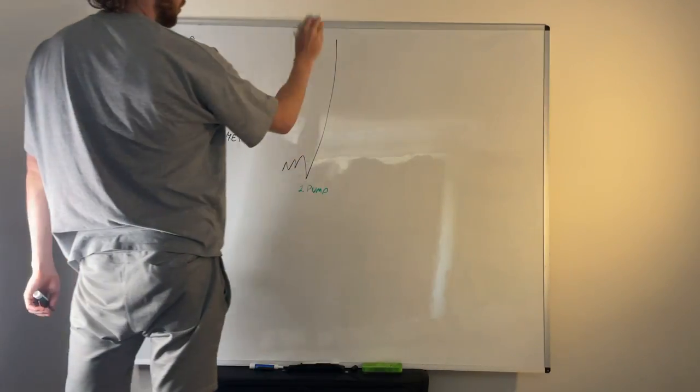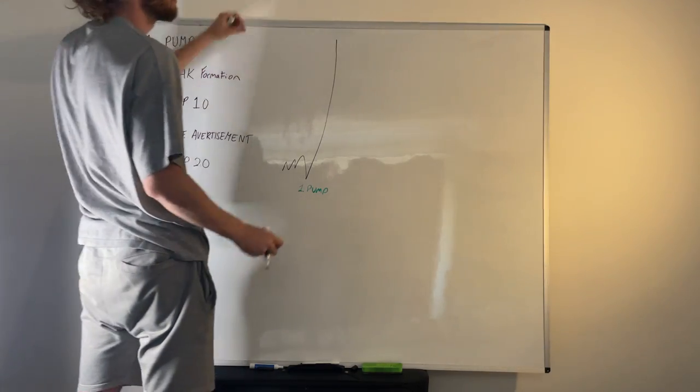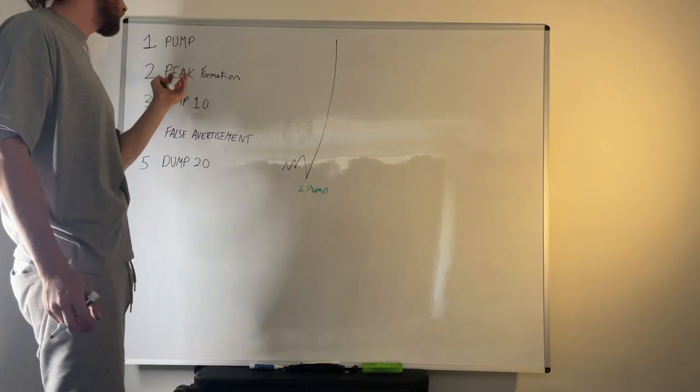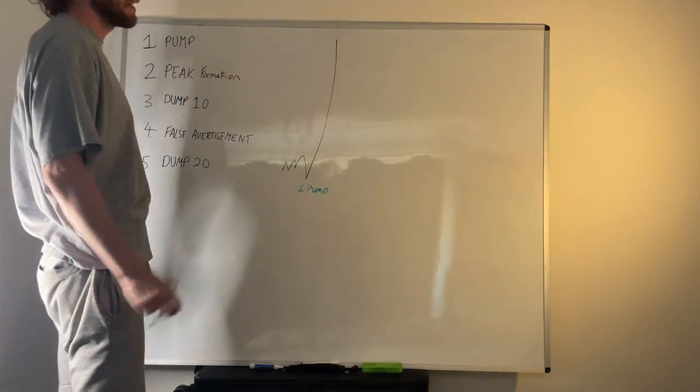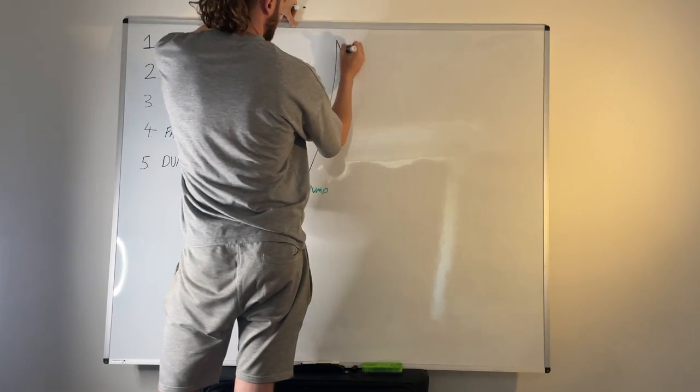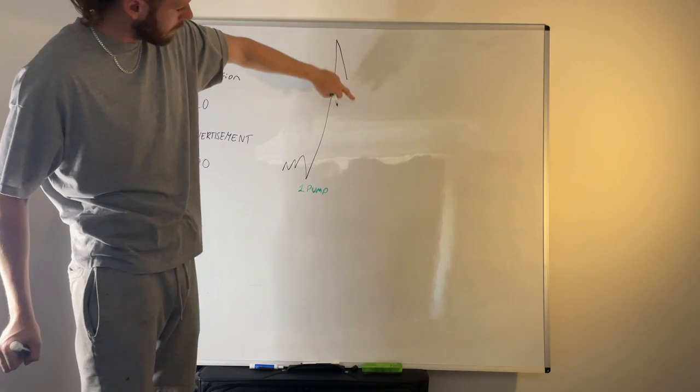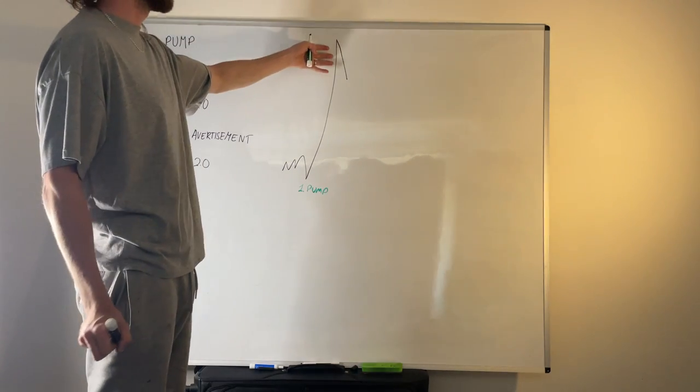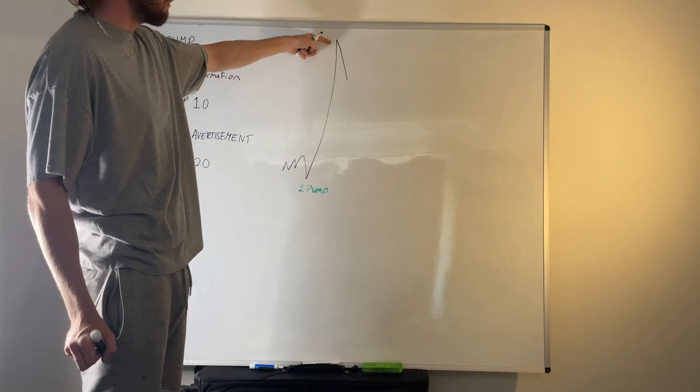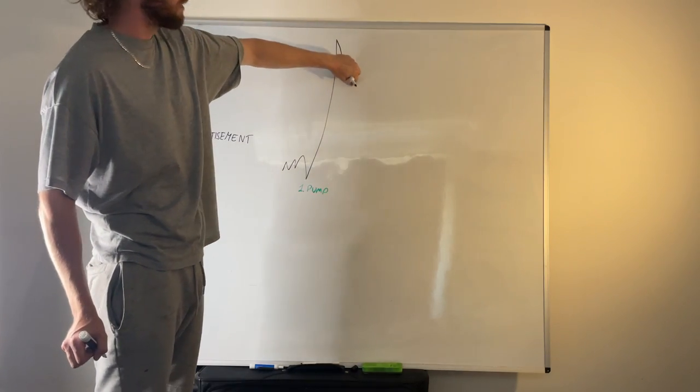After we have the pump up, the next market condition or stage we're looking for is the peak formation. The peak formation is literally what it says, the peak being formed, and that always comes in the form of an A-top or a V-top. We're looking for a big impulse move up followed by a big impulse move down. This is basically signifying that this is them trapping the volume.